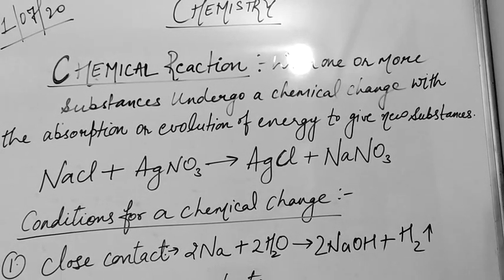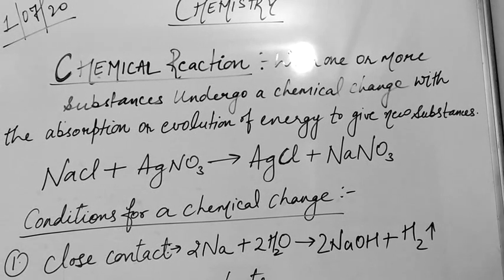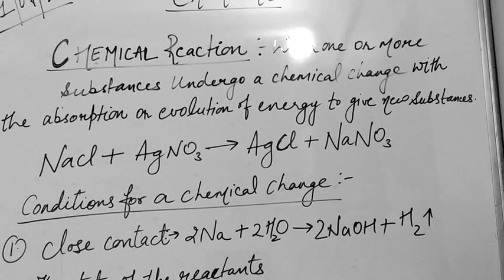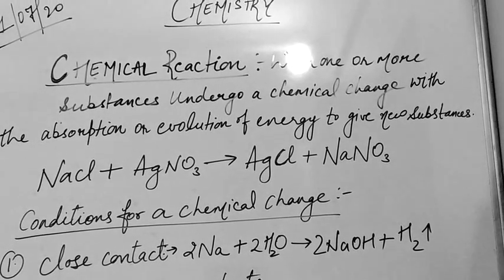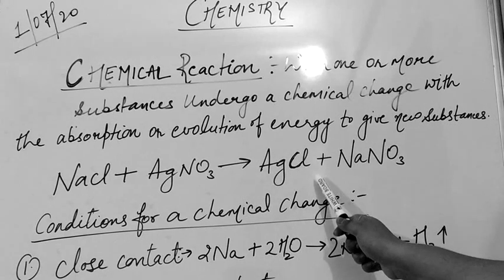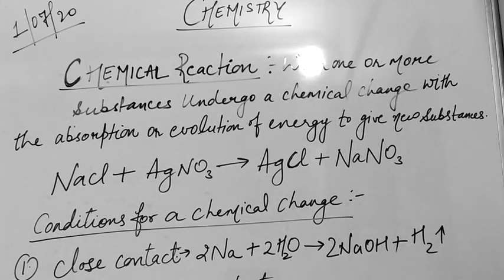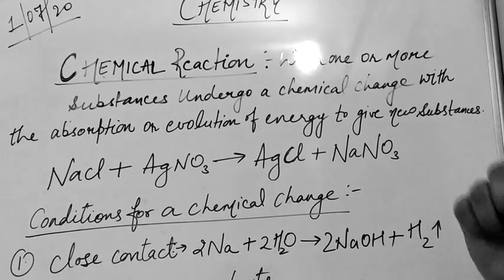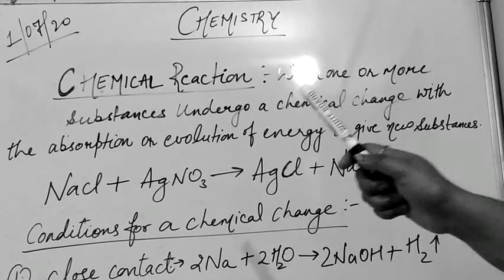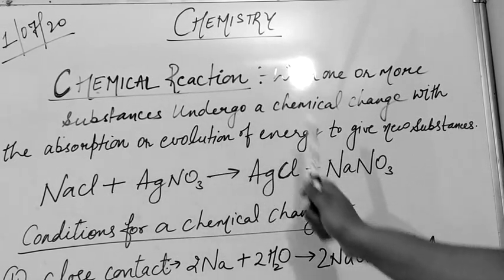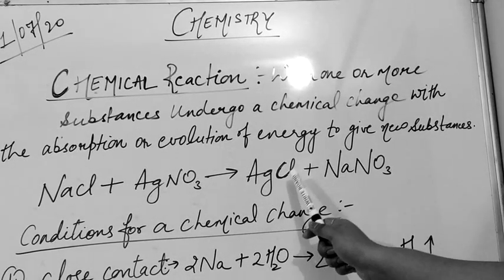Now chemical reactions cannot take place very easily like we take two compounds we are trying to add them and we will get a new product. No. There are some important conditions which we have to follow for a chemical reaction to take place. Before moving on to the conditions let me explain you one more thing first. As I told you we took NaCl as a reactant but in a product we didn't get NaCl. We got a new product.